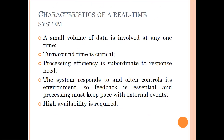What are some characteristics of a real-time system? In a real-time system, a small volume of data is involved at any one time, because the response has to be instant. Also, the turnaround time is critical — meaning the time from when you issue an instruction to when you get the result. The third characteristic is that processing efficiency is subordinate to response need. The fourth is that the system responds to and often controls its environment, so feedback is essential and processing must keep pace with external events.